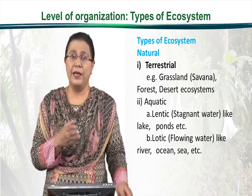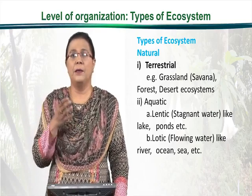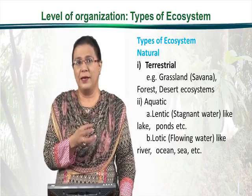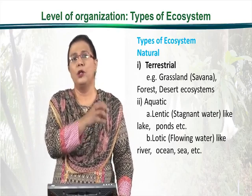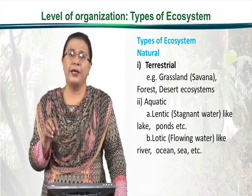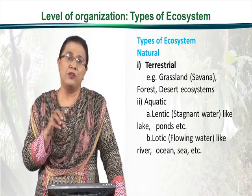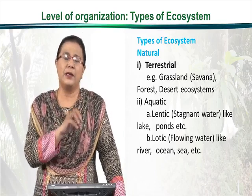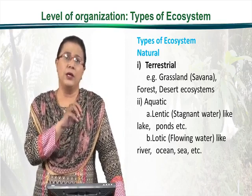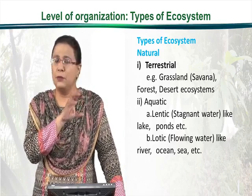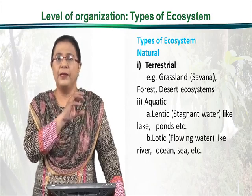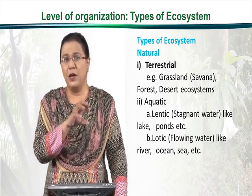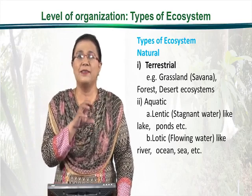In the case of desert ecosystems, it is again a part of the terrestrial ecosystem. The hottest desert, the Sahara Desert, is found on the northern side of the African continent. Life forms there are very specific because it is very hot and water is a limiting factor, so only animals and plants that can withstand this severity will survive.